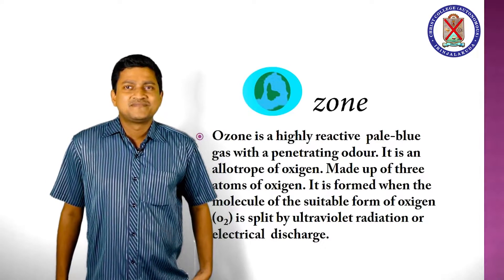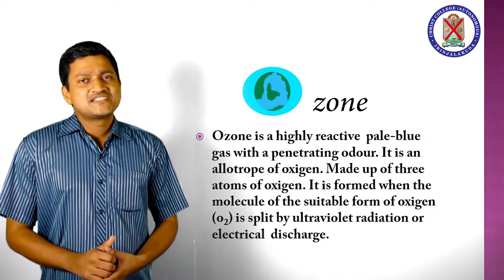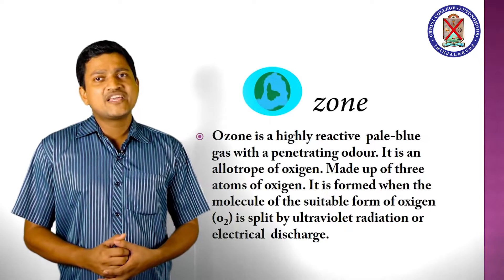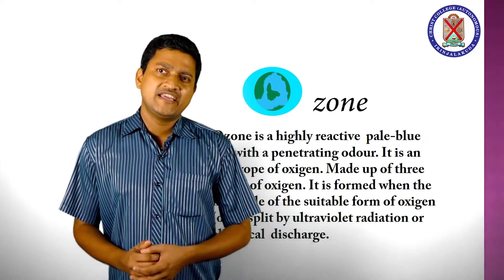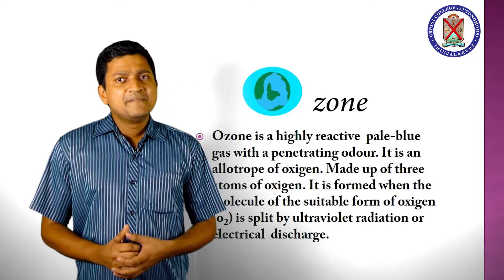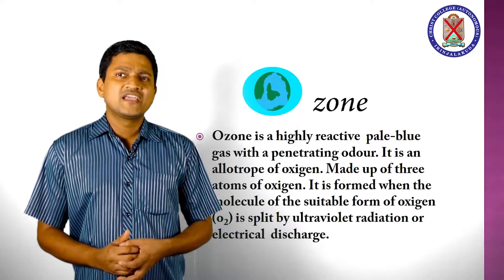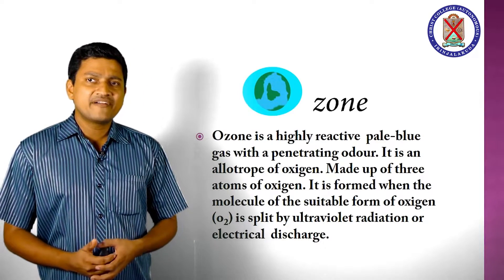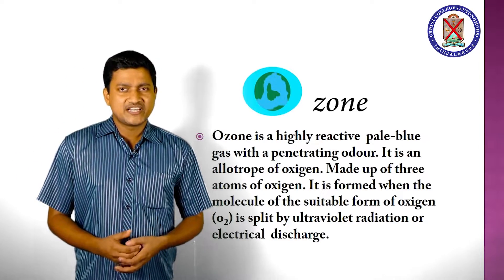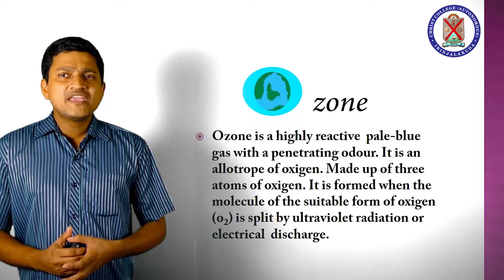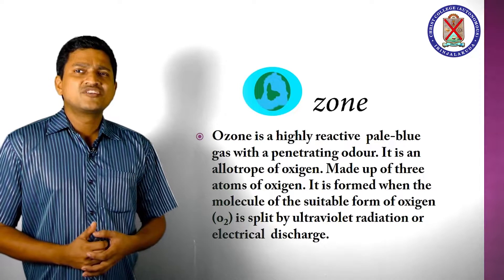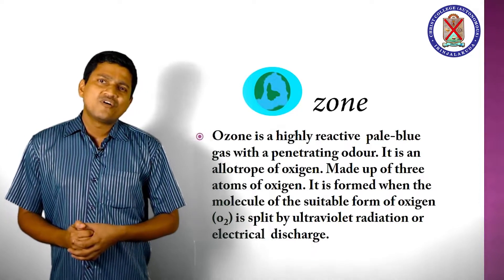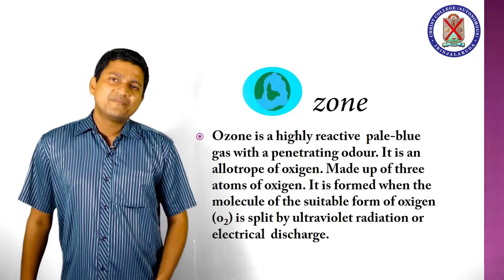Next we discuss about ozone. Ozone is a highly reactive pale blue gas with a penetrating odor. It is an allotrope of oxygen made up of 3 atoms of oxygen. It is formed when molecules of O2 are split by ultraviolet radiation or electrical discharge. At ground level, ozone can cause asthma attacks, stunted growth in plants, and corrosion of certain materials. Some plants also produce ozone at ground level.